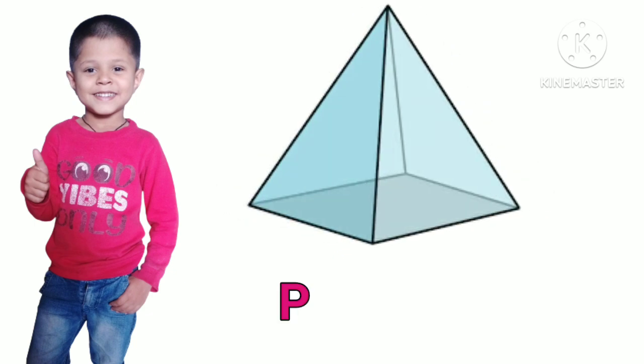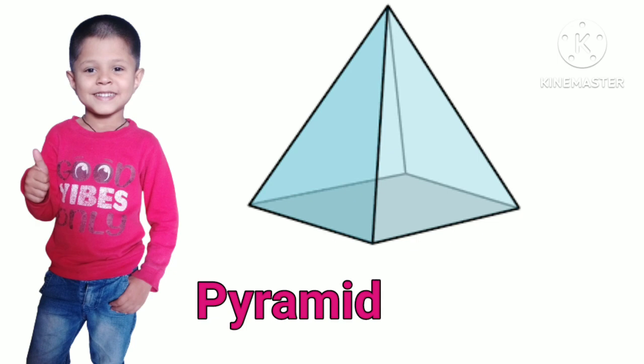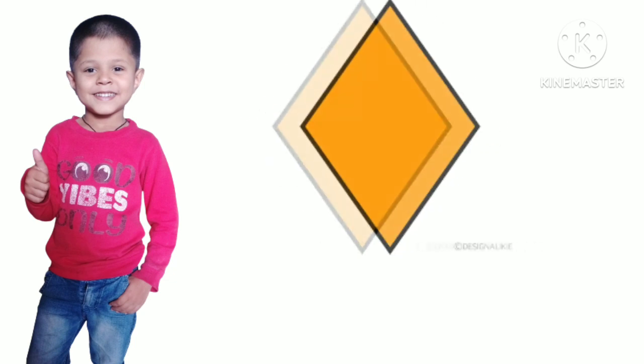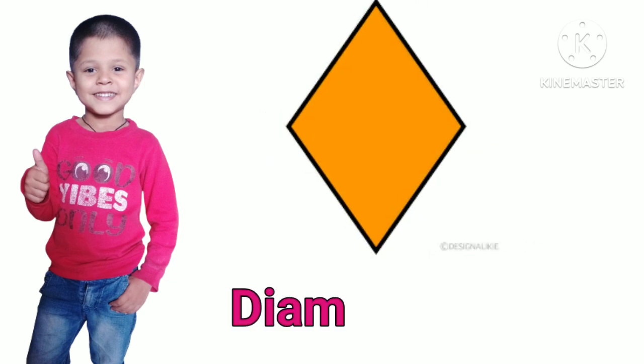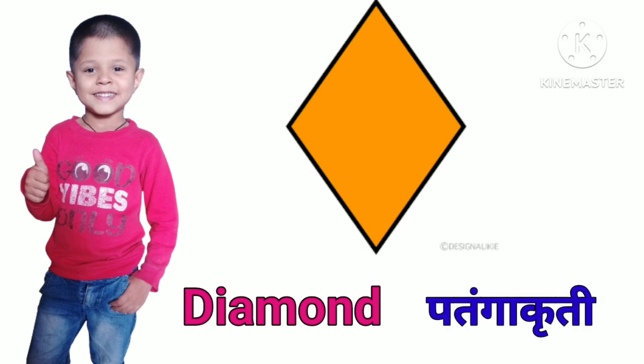Pyramid. P-Y-R-A-M-I-D. Pyramid means Trikonakruti. Diamond. D-I-A-M-O-N-D. Diamond means Patangakruti.